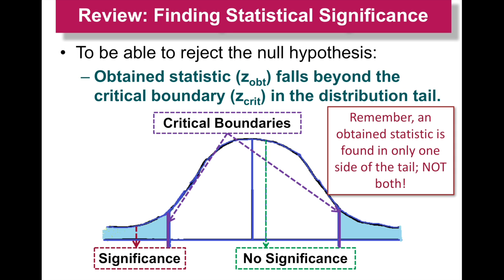To be able to reject the null hypothesis, we take our z obtained and see where it falls. As long as the z obtained falls beyond the critical boundary — the z crit — then you can reject the null hypothesis. If our z obtained falls in either shaded area, we reject the null. You only get one number for z obtained; it can be negative or positive. You can't get both plus and minus — you can have plus and minus critical regions, but only one obtained statistic.